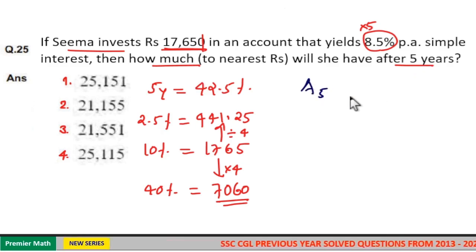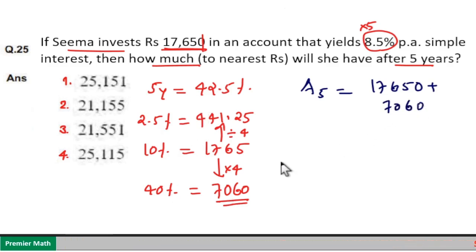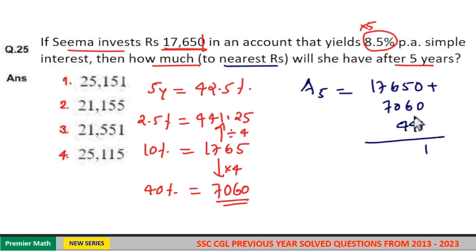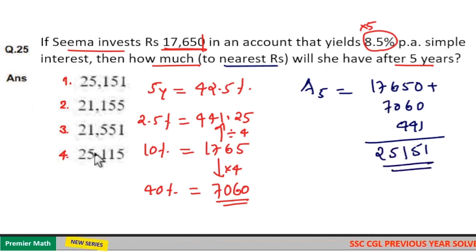Now, amount generated after 5 years equals sum 17,650 plus 40% equals 7,060 and 2.5% equals 441. Ignore 0.25 because we can take nearest value. This equals 1. 6 plus 4 plus 5 is 5. 6 plus 4 plus 1 is 1. 17 plus 7 plus 1 is 25. So, 25,151. Option 1 is your answer.